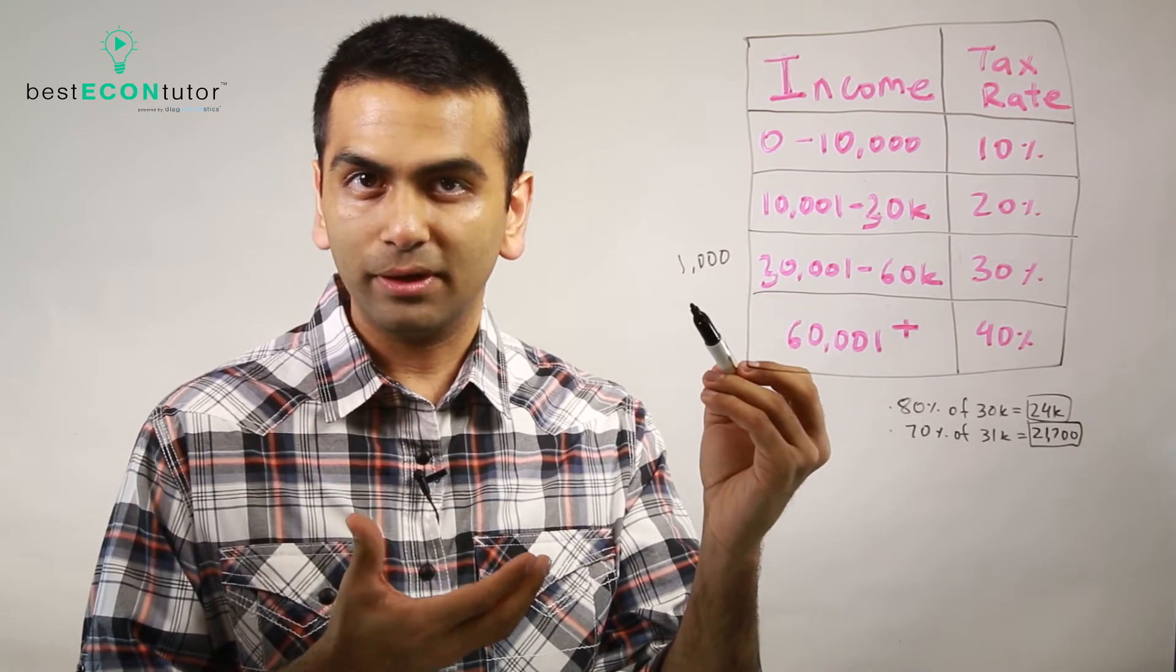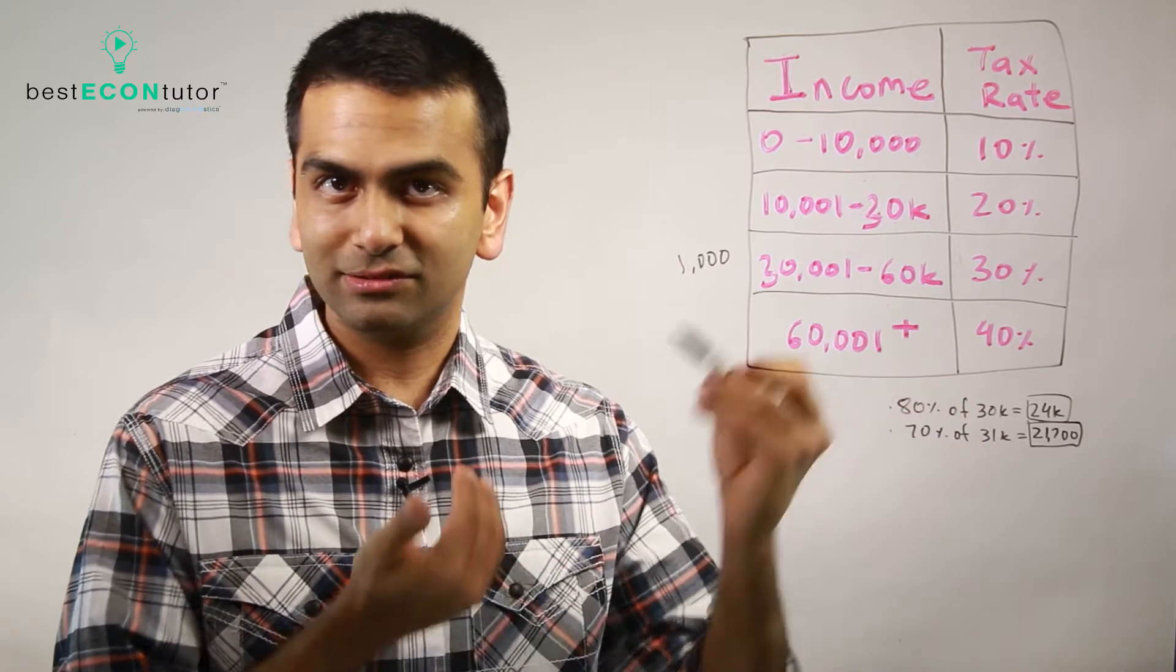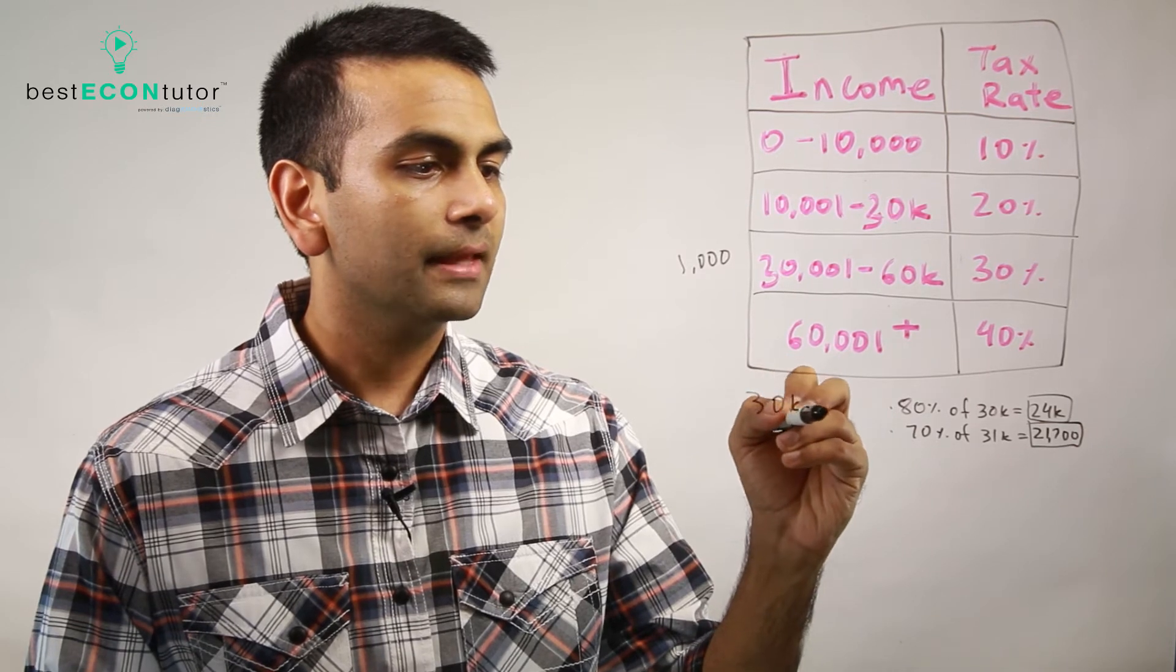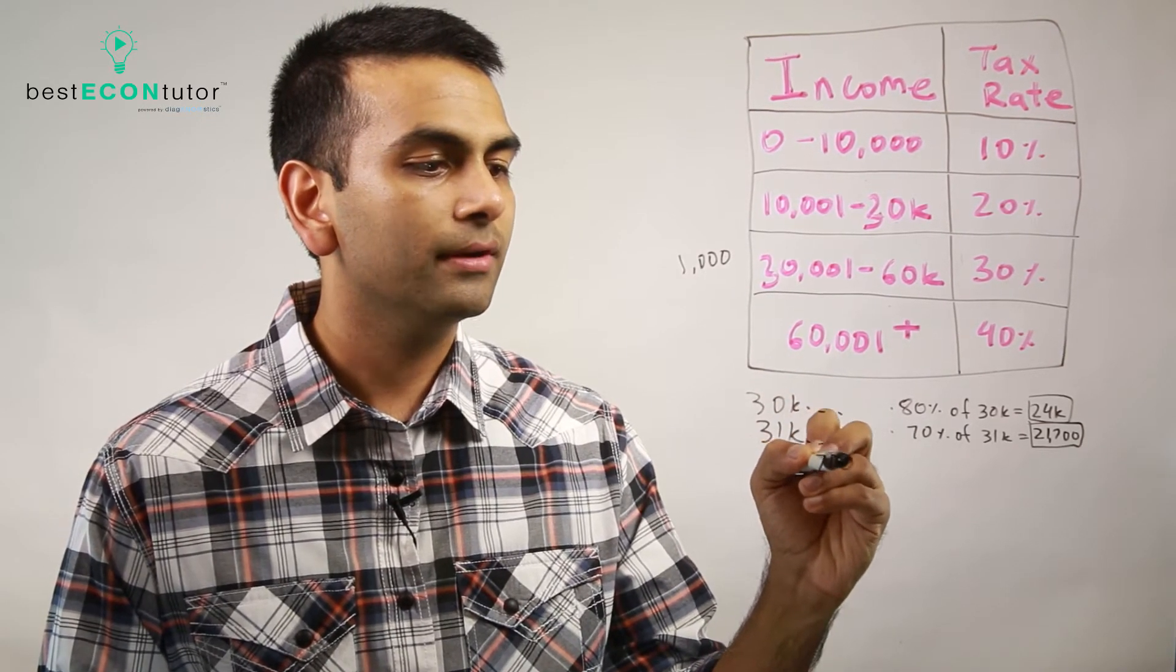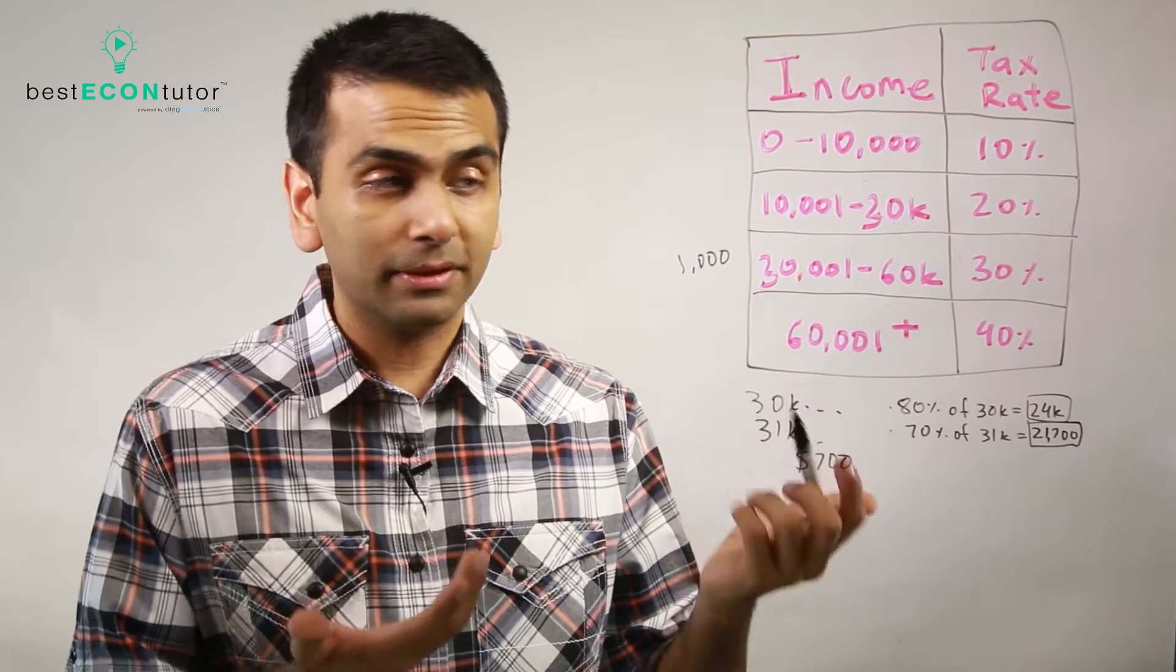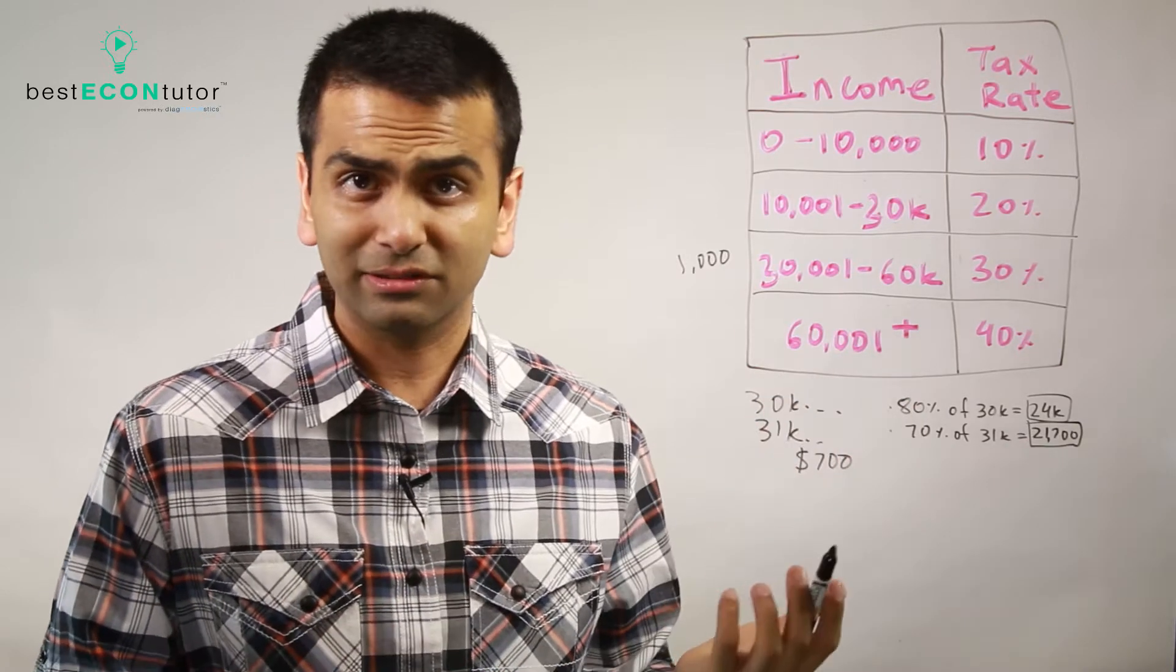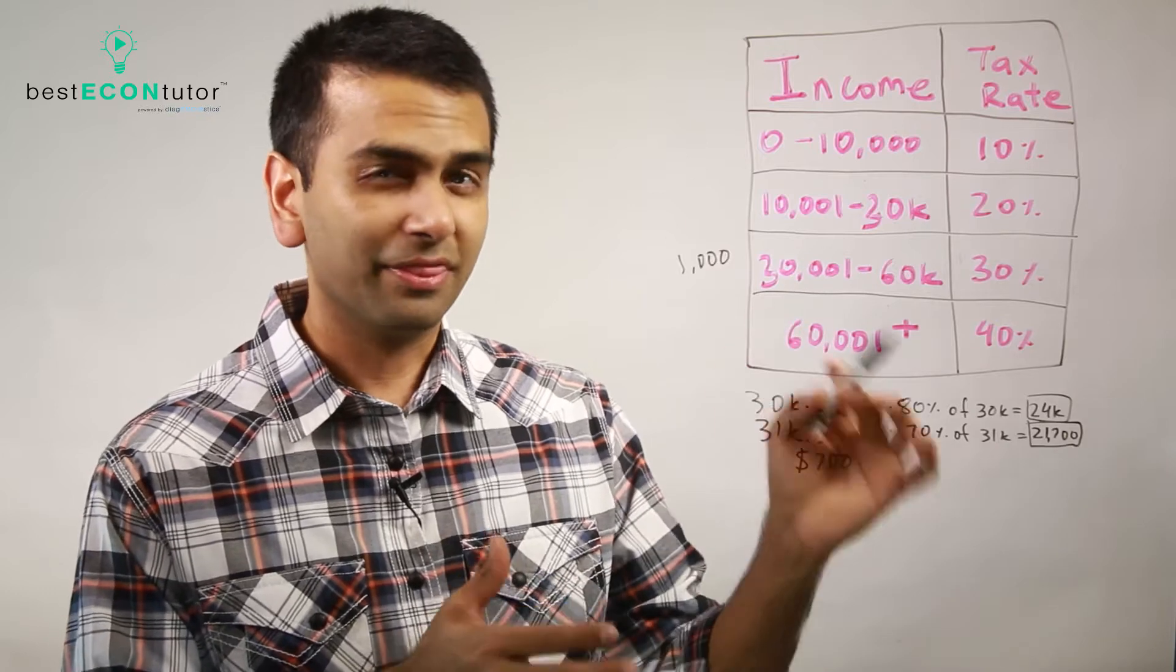Again, out of that extra $1,000 that you earned, you're basically paying 30%, meaning $300 in taxes. So basically, whatever you made at $30,000, if you now make $31,000, you're going to come home with $700 more dollars. So it's not quite as unfair as people think because even if you fall into a different bracket, it really doesn't make that big of a difference. You're actually still going to bring home more money. It doesn't penalize you for making more in that sense. There is a lower incentive to make more.